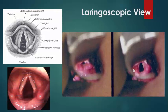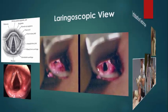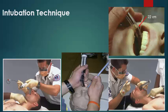Intubation technique: hold the laryngoscope in the left hand. Insert the blade into the right side of the mouth, displacing the tongue. Advance the blade tip into the vallecula. The glottic opening will be exposed with upward traction of the handle, allowing visualization of the vocal cords. An assistant can apply cricoid pressure as needed.